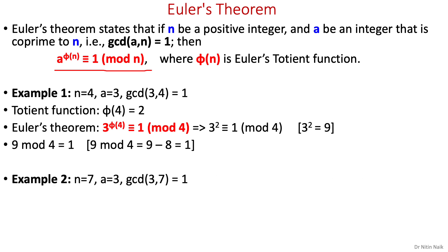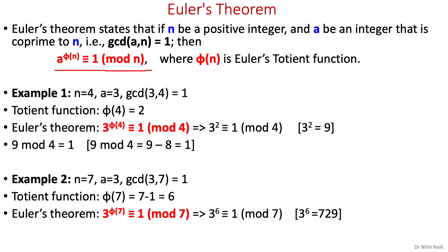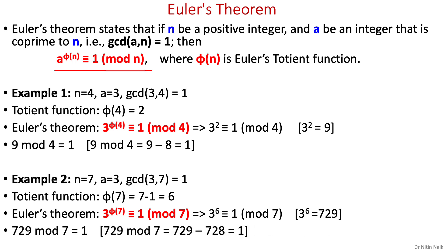Now a prime number example: n equals 7, a equals 3. Their GCD is 1. The Totient function of prime n is n minus 1, which is 6 — verifiable in the table. Applying Euler's theorem: 3 to the power 6 is congruent to 1 mod 7. This gives 729 mod 7 equals 1 — correct.